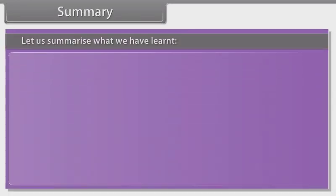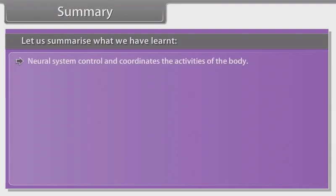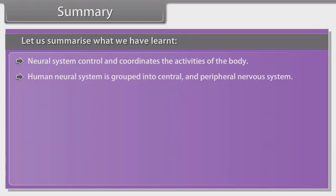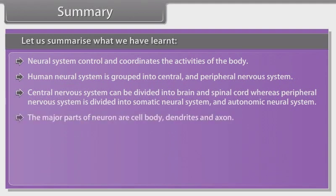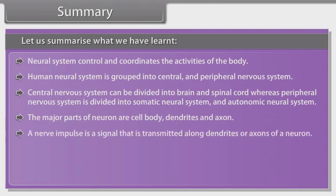The neural system controls and coordinates the activities of the body. The human neural system is grouped into the central and peripheral nervous system. The central nervous system can be divided into the brain and spinal cord, whereas the peripheral nervous system is divided into the somatic neural system and the autonomic neural system. The major parts of a neuron are the cell body, dendrites, and axon.